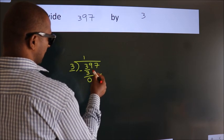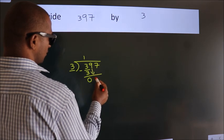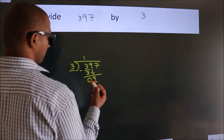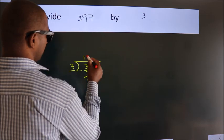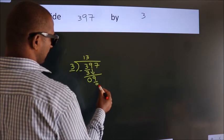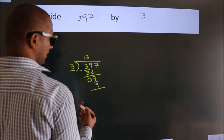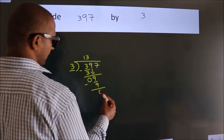After this, bring down the beside number. So, 9 down. So, 9. When do we get 9? In 3 table. 3 3's, 9. Now, we subtract. We get 0.